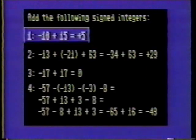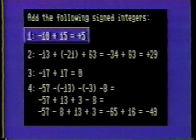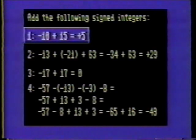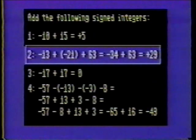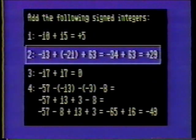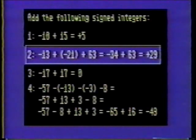Add the following signed integers. Number one: negative ten plus fifteen is positive five. Number two: negative thirteen plus negative twenty-one plus sixty-three.